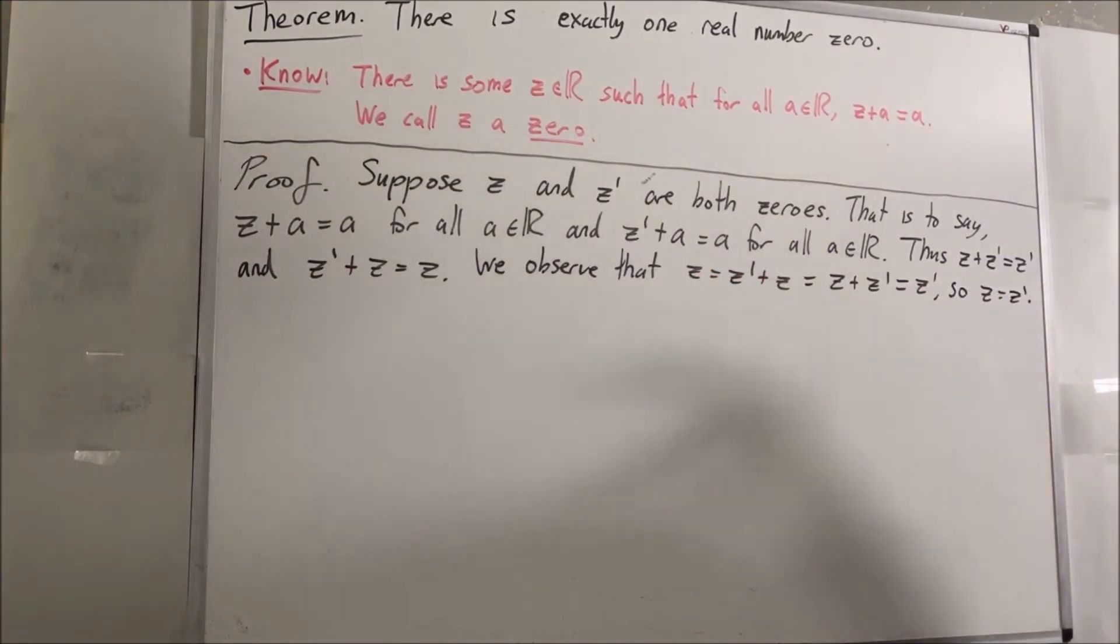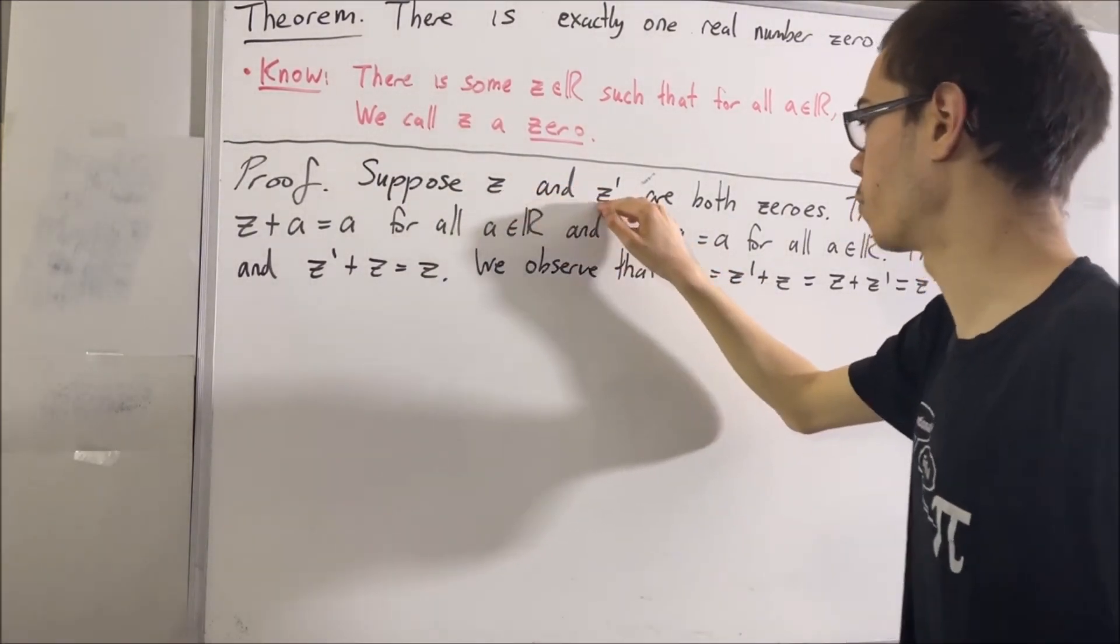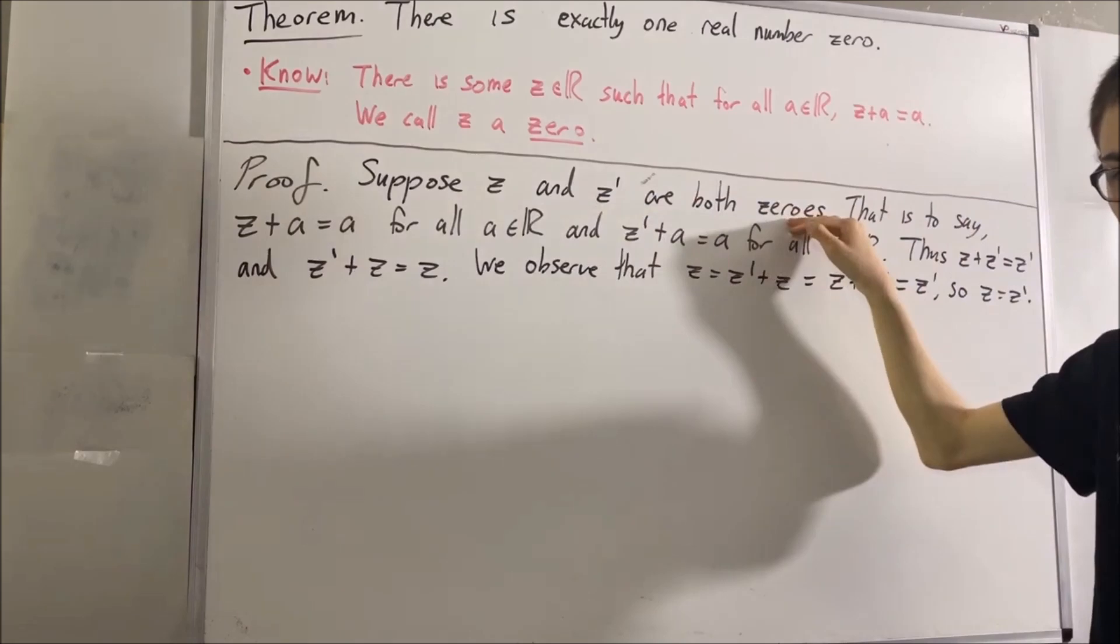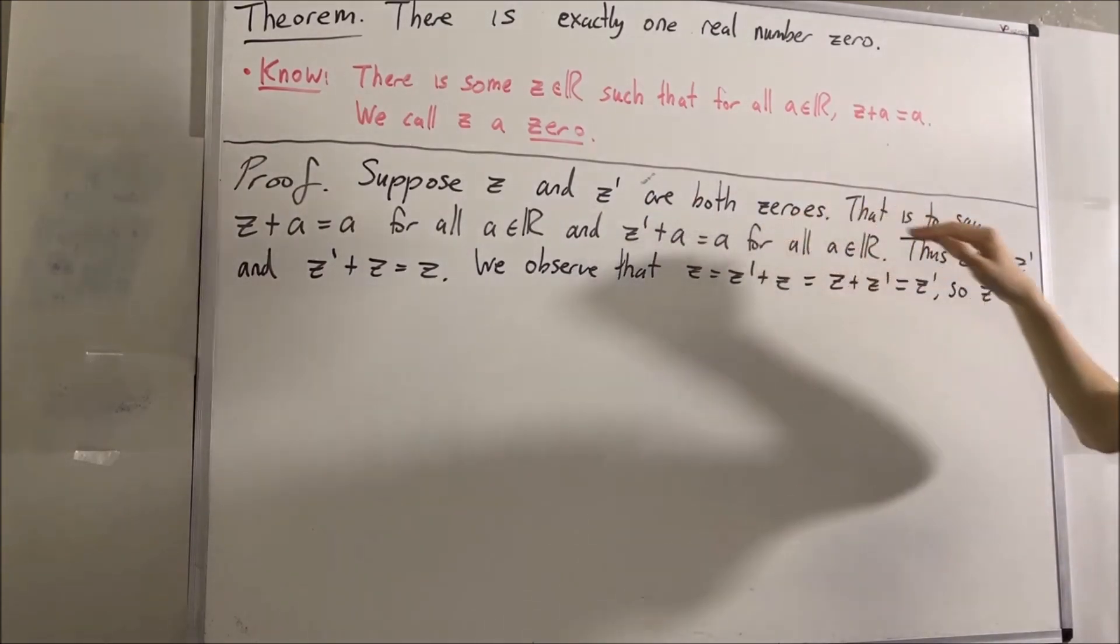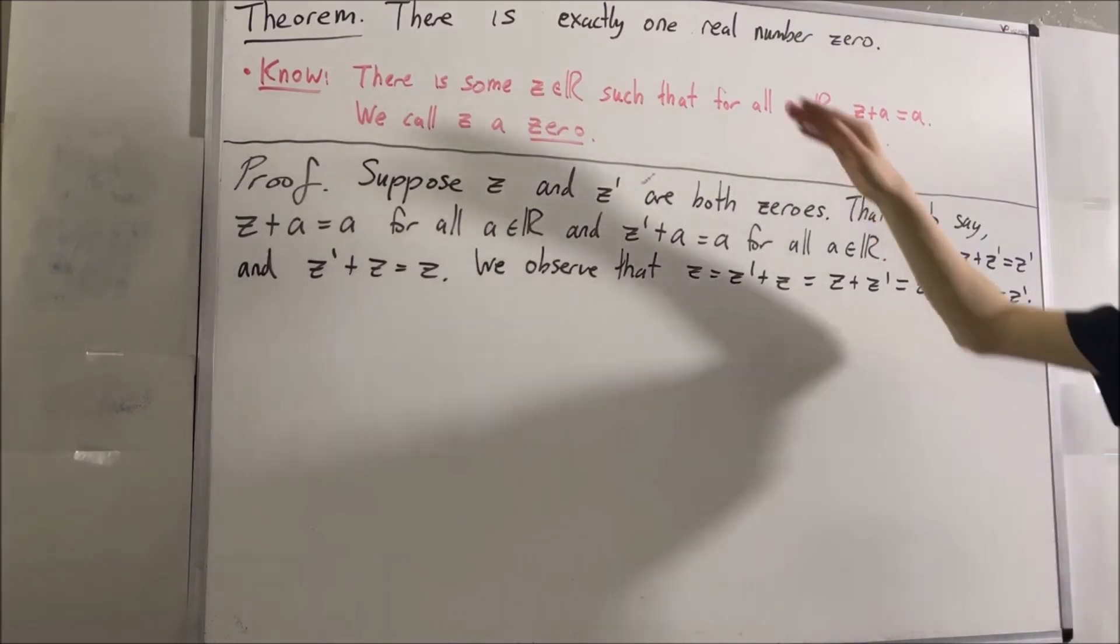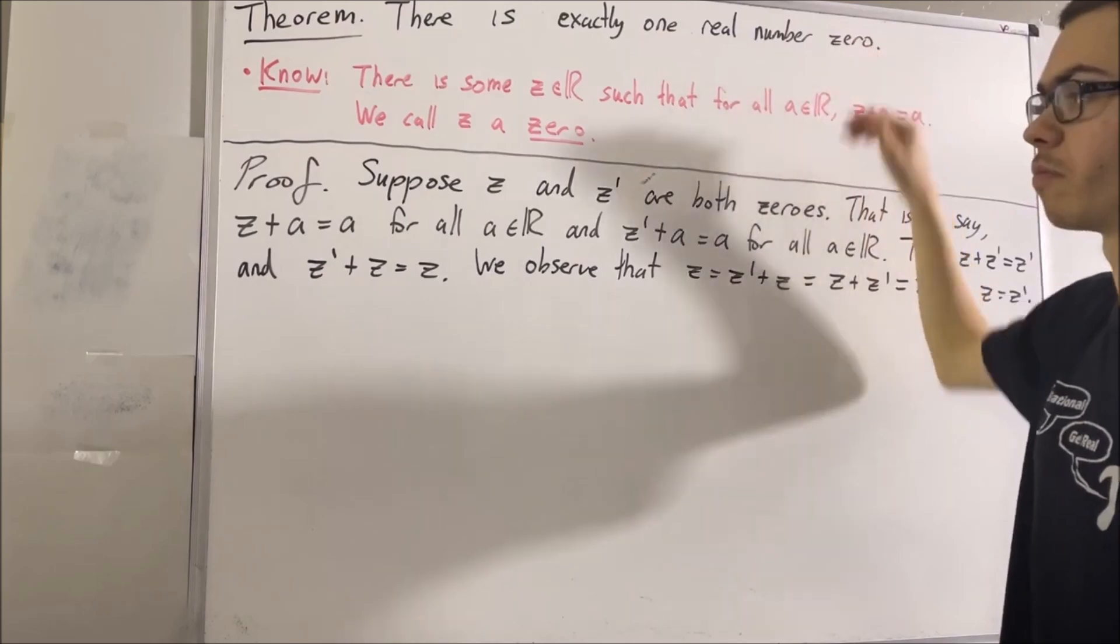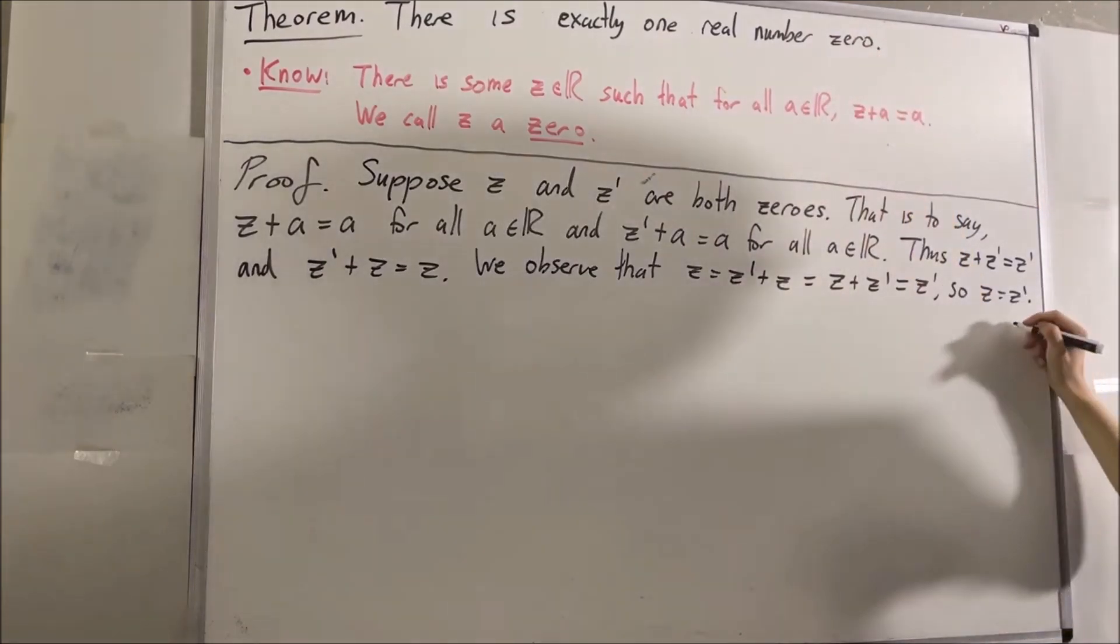So putting this all together, we gave ourselves two real numbers z and z prime which are both zeros, and from here we deduce that they must be equal to each other. And so this proves that there's exactly one real number which is zero. So this completes the proof.